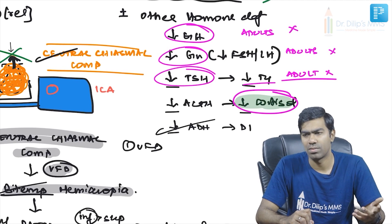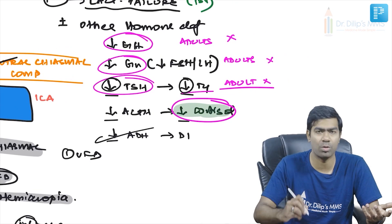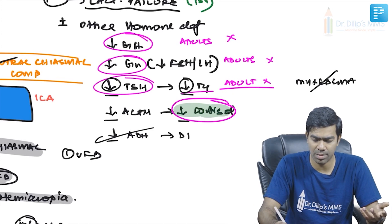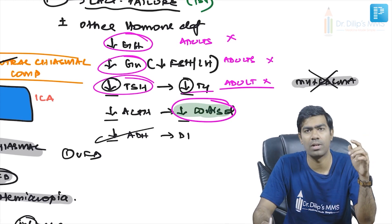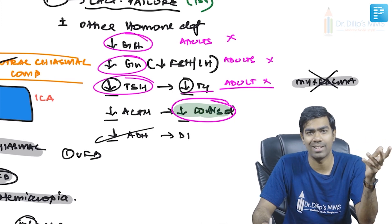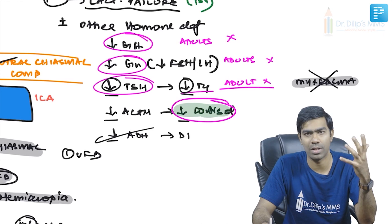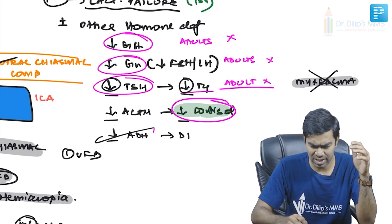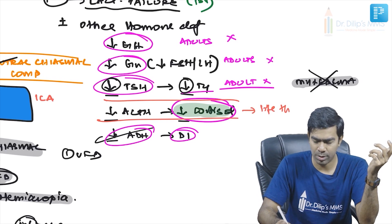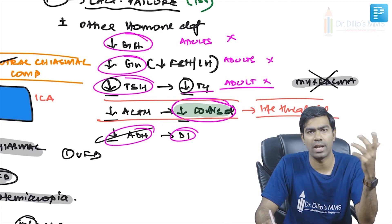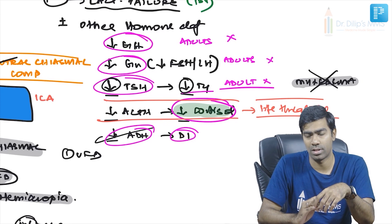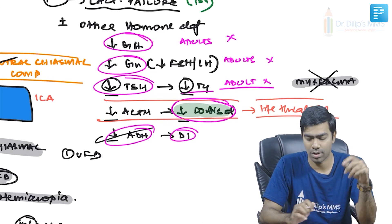Low TSH and low thyroxine in secondary hypothyroidism are not acutely life-threatening. Importantly, in central (secondary) hypothyroidism, myxedema is extremely rare — unlike primary hypothyroidism where myxedema is common. Low ADH is also not immediately life-threatening unless very severe. However, low cortisol is definitely life-threatening, as cortisol is essential during stress.